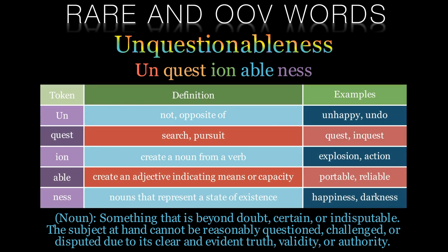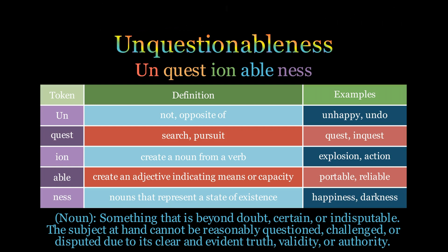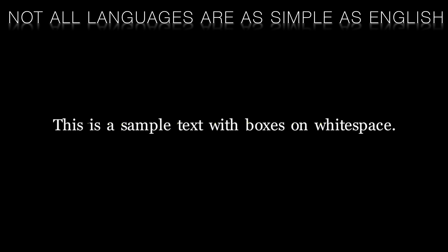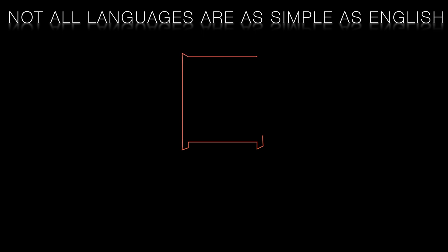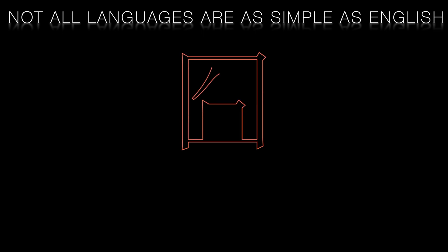At its most basic level, tokenization involves splitting up a string of text into individual words. This is relatively straightforward in English where words are typically separated by spaces. However, other languages may not have spaces between words, or may have complex compound words that need to be broken down into their constituent parts.